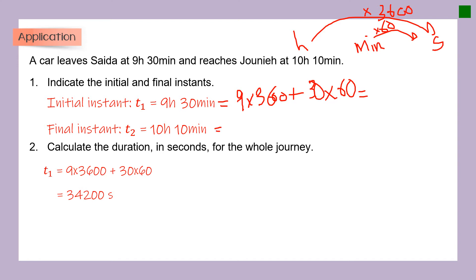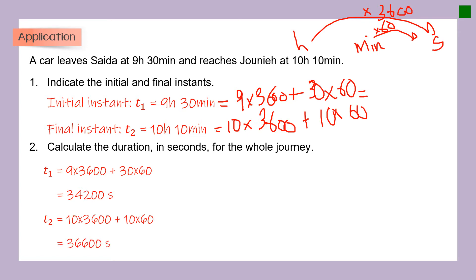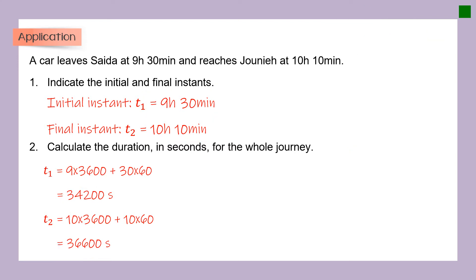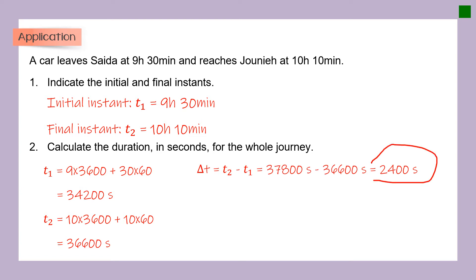For t2, it's 10 times 3,600 plus 10 times 60, which equals 36,600 seconds. Now I can find the duration: delta t equals t2 minus t1. After converting both to seconds, it's easy to subtract. So t2 minus t1 equals 36,600 minus 34,200, which gives 2,400 seconds.